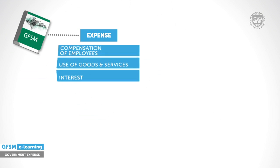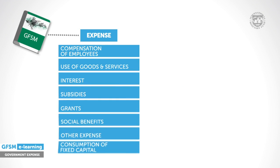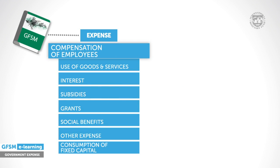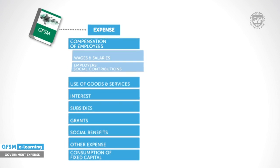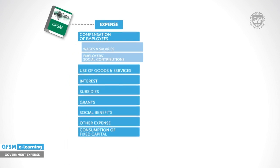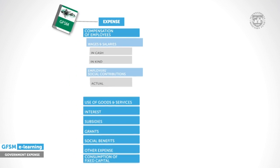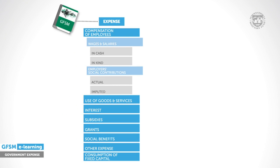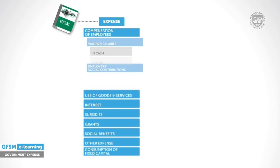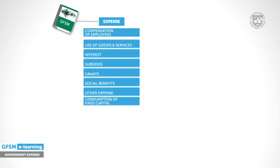There are eight main categories. Compensation of employees — government employee earnings — is an important group of expense for most governments because of its size. This category may also include in-kind expenses, such as benefits provided to employees for their private benefit, such as free bus tickets or housing.